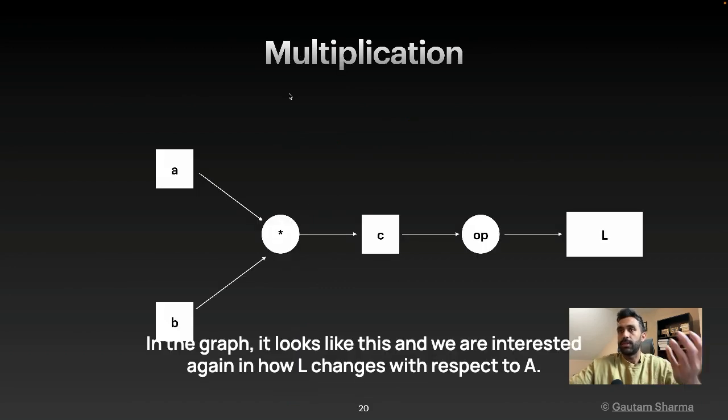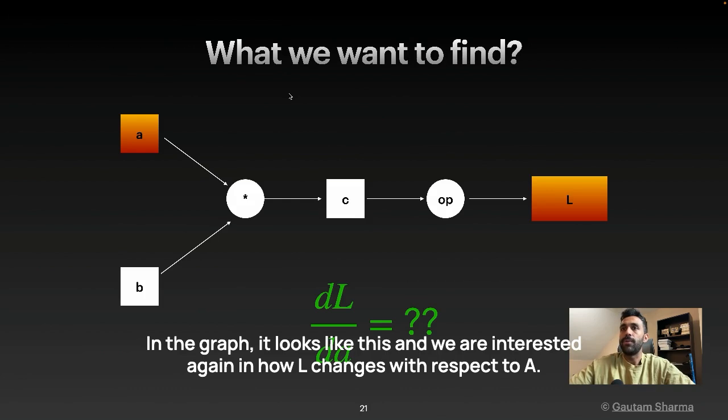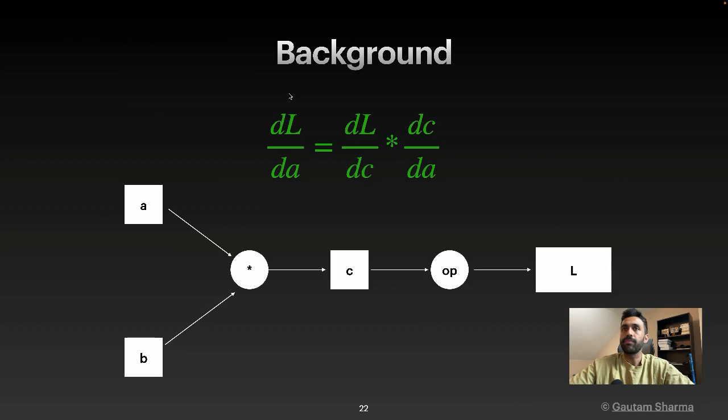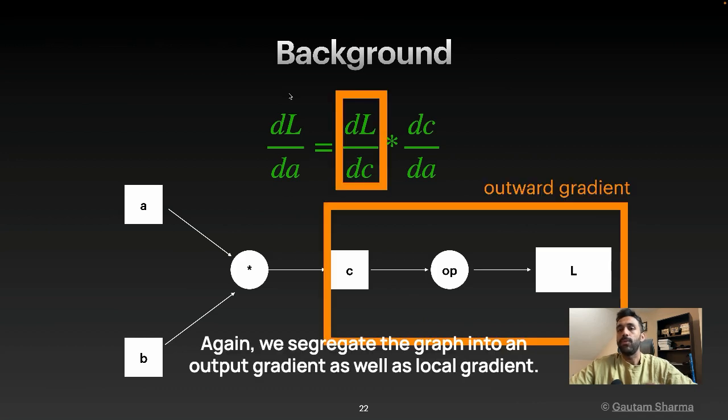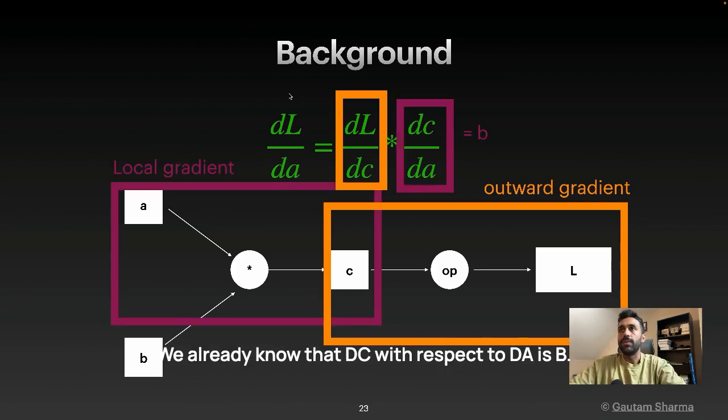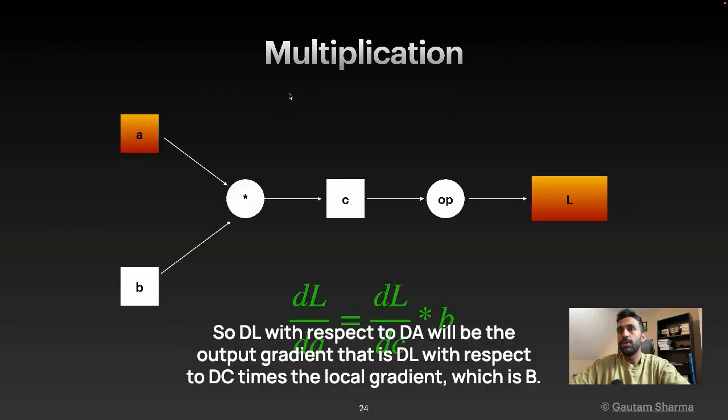In the graph, it looks like this. And we are interested again in how L changes with respect to A. Again, we segregate the graph into an output gradient as well as local gradient. We already know that DC with respect to DA is B. So DL with respect to DA will be the output gradient that is DL with respect to DC times the local gradient which is B.